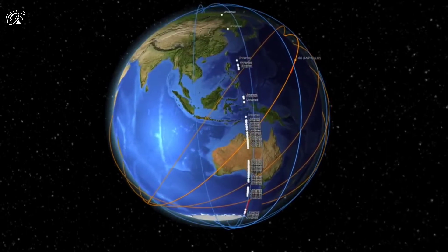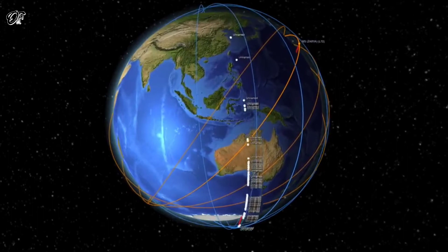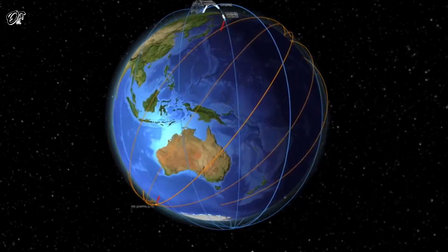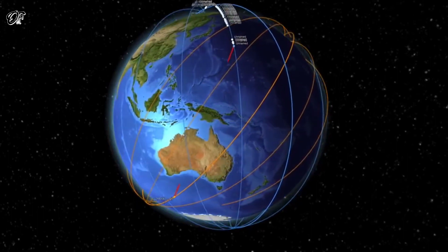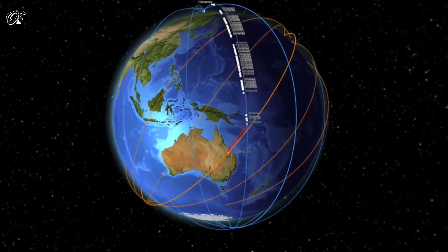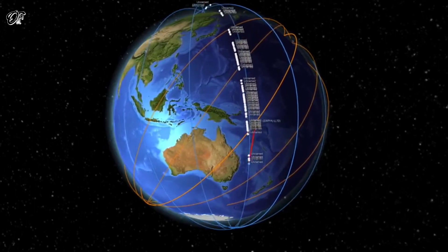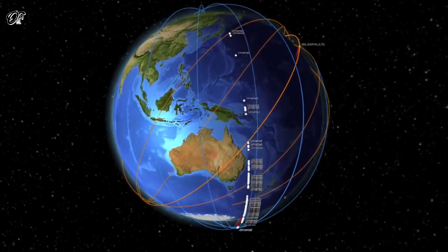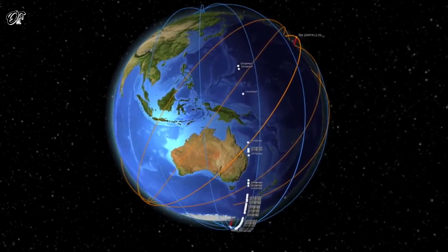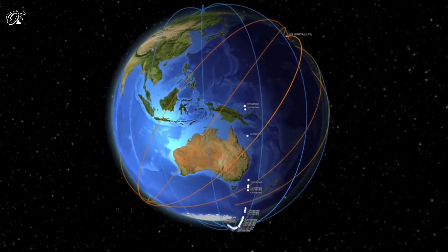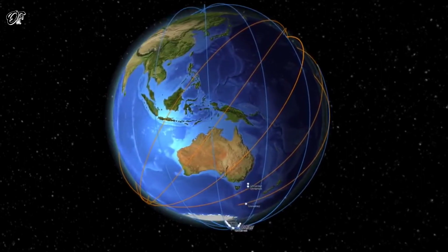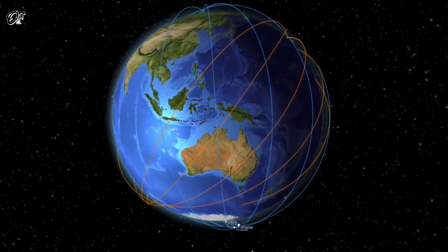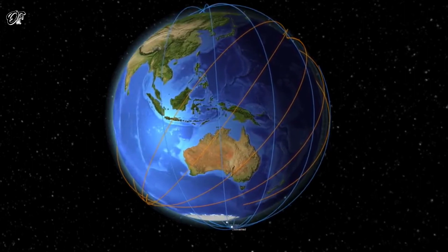This year SpaceX expects to perform 23 additional Starlink launches, all of which LEO Labs will track. Our visualization platform automatically updates once new objects are added to our catalog, so searching "Starlink" will continue to show each new batch of satellites once we begin tracking them with our global network of phased array radars.